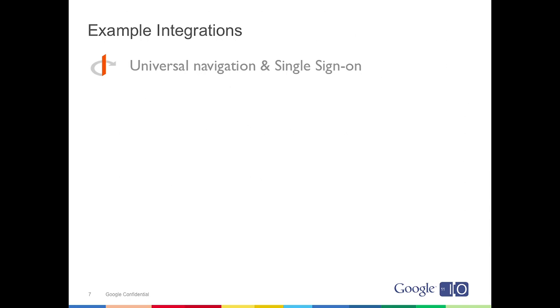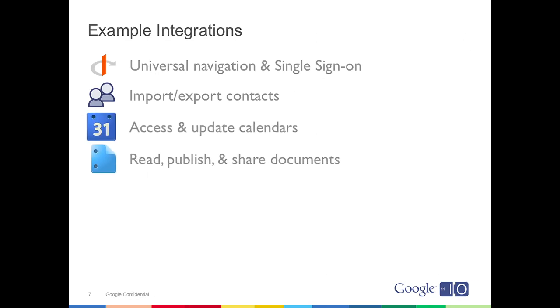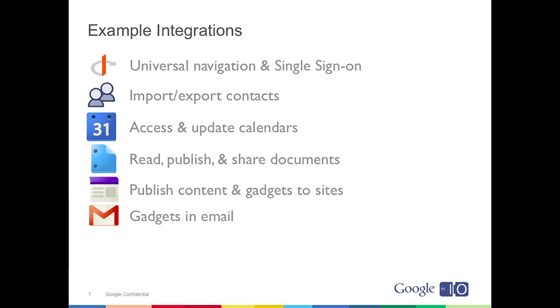When we talk about integration, I'll give you a couple of examples of what I mean. It includes things like providing universal navigation — a quick and consistent way for users to access their apps and sign in without having to have another username and password. We thought this was so important that we made it a core requirement for joining the Marketplace. You could also do things like import and export contacts, access and update calendars and documents. Applications can also publish content and gadgets to sites. Gadgets can be used in Gmail, on Calendar, and in the Gmail sidebar. And another one which is often overlooked is Google Talk as an integration play, and we'll see some examples of that later on.